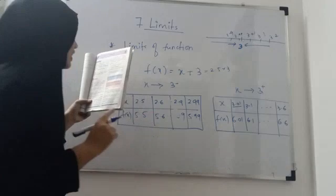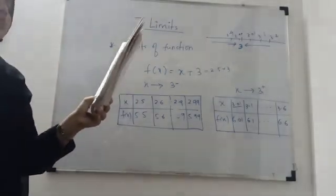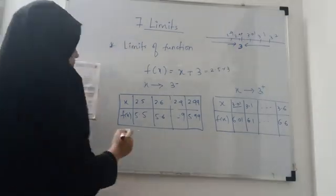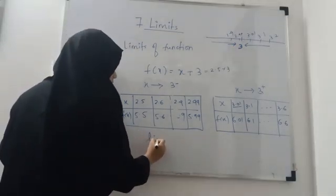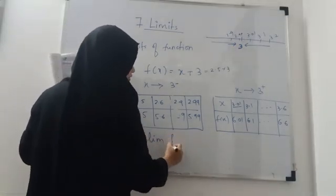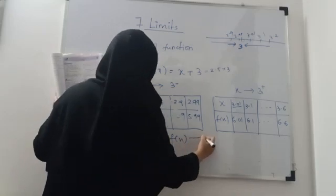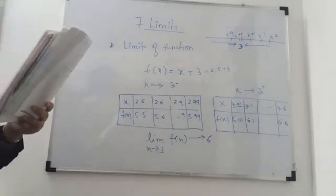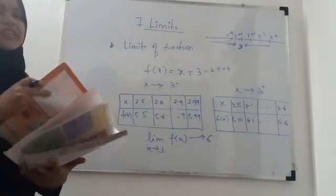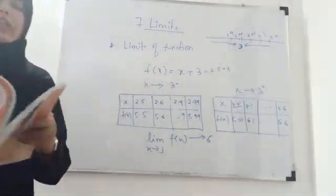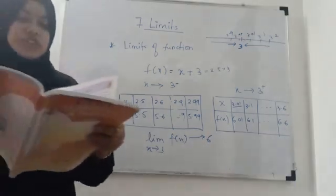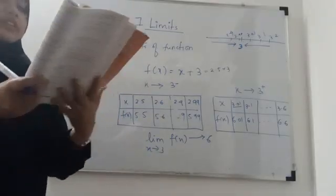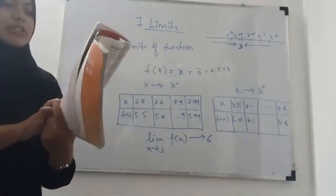Therefore, we can say that the limiting value of the function is 6. We write: the limiting value of the function tends to 6 whenever x tends to 3. This is the general idea about limits. Now we will see the actual theoretical definition of the limit, and some examples based on that.